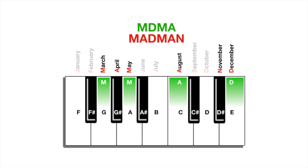Now this is where it starts to get kind of freaky, so just buckle up because it's going to get a little weird. If you again consider that same set of white keys used to spell out MDMA, you find that the names of those keys — G, A, C, and E — when you rearrange them, spell out CAGE. MDMA. Madman. Cage.